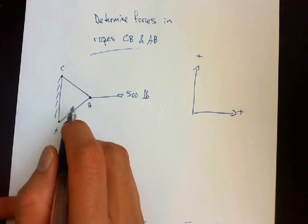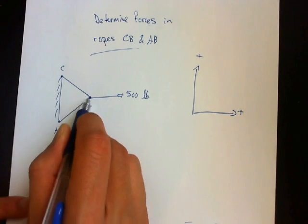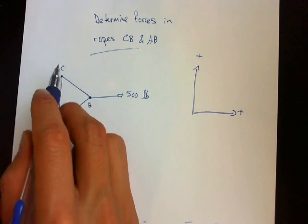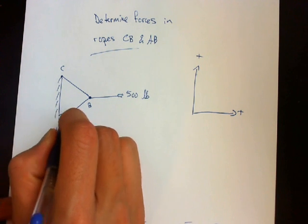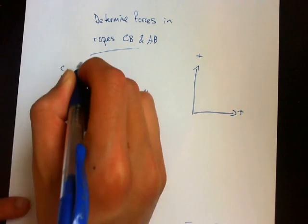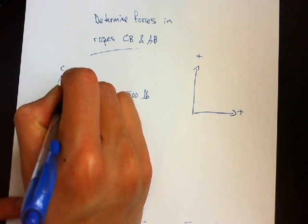Here we have a system with ropes AB and CB attached to this wall. This forms an angle of 30 degrees and this is 60 degrees.